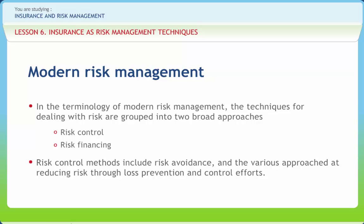The objective of risk avoidance is the elimination of the activity or condition that gives rise to the particular risk so that the possibility of a loss becomes non-existent. Loss prevention attempts to reduce the frequency of loss associated with inescapable risk by preventing the occurrence of loss. Loss prevention actions tend to be directed at hazards or conditions that increase the likelihood of a loss occurring. Loss reduction is a technique directed at reducing the severity of losses that do occur. It can be used before, during, or after a loss has occurred and is designed to minimize the magnitude of the loss and its financial impact on a family or individual.